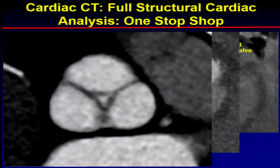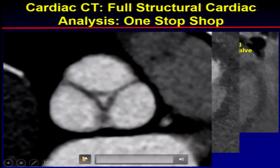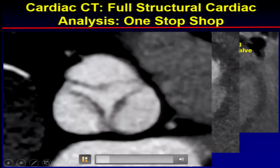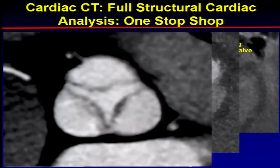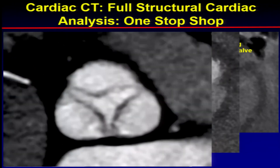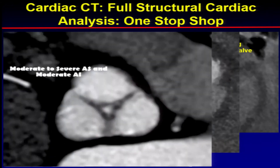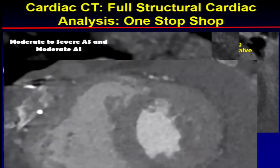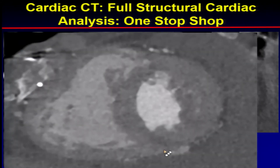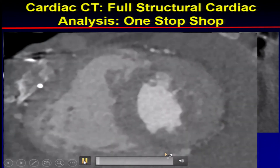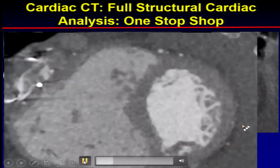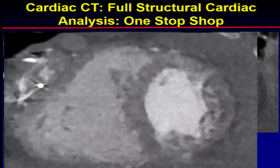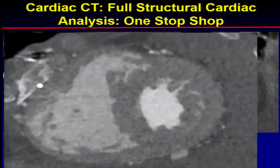This patient also had aortic valve disease — moderate to severe AS and also moderate aortic regurgitation on the gated images. We were able to look at cardiac function, and the patient had normal left ventricular function and just mildly diminished right ventricular function.